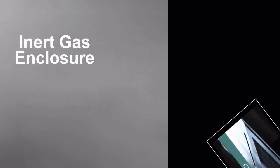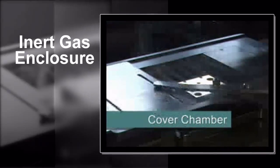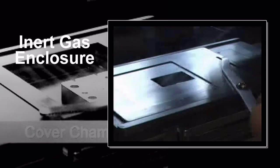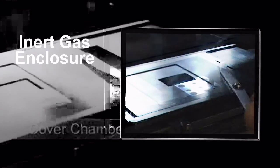To help eliminate the formation of an oxide layer, forming gas with approximately 5% hydrogen is chosen for its oxygen-reducing atmosphere. It is shown here with the exhaust inactive to demonstrate the gas flow.